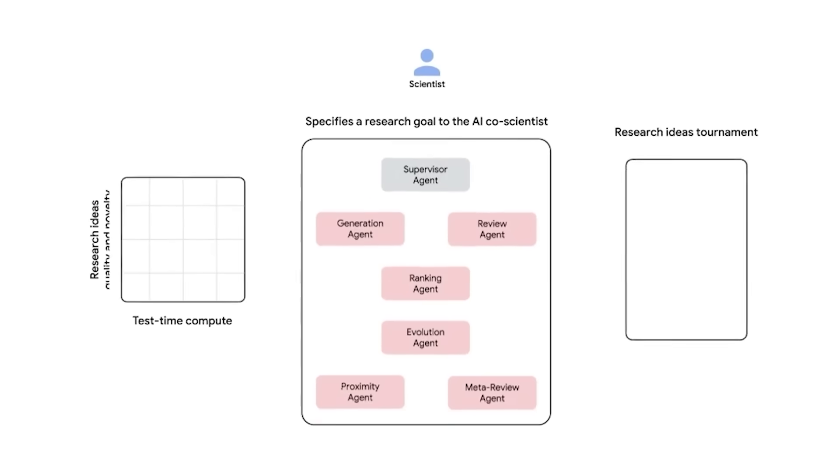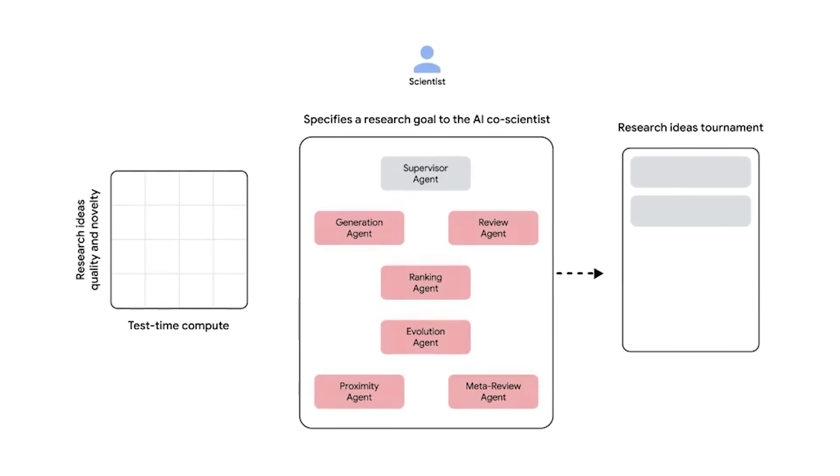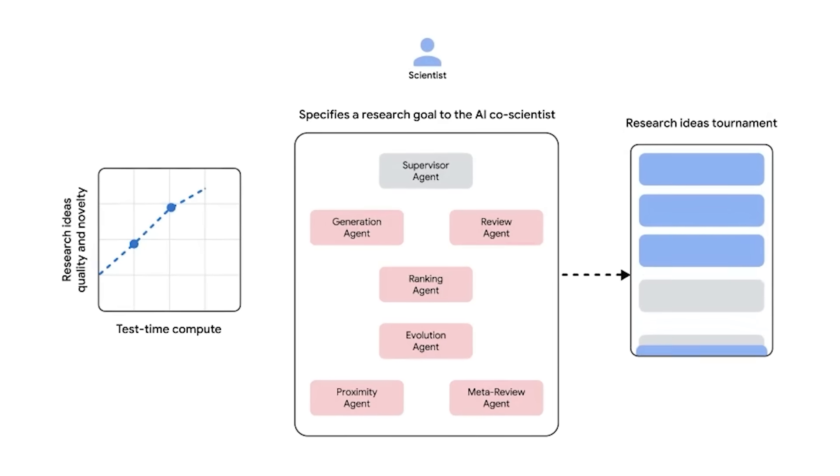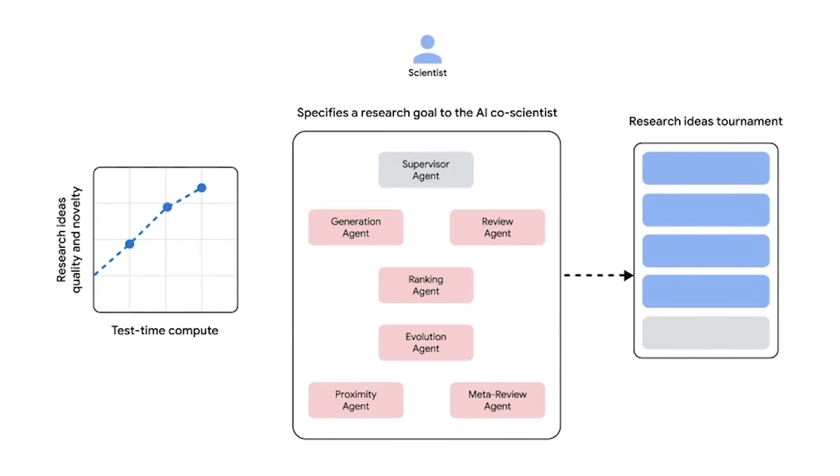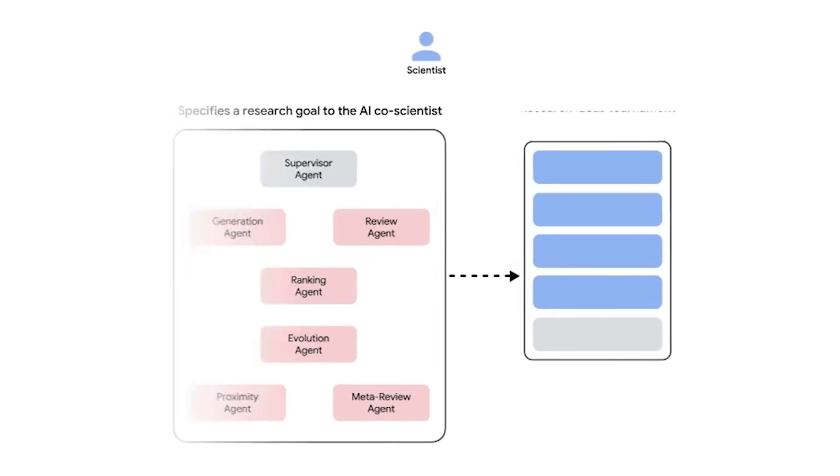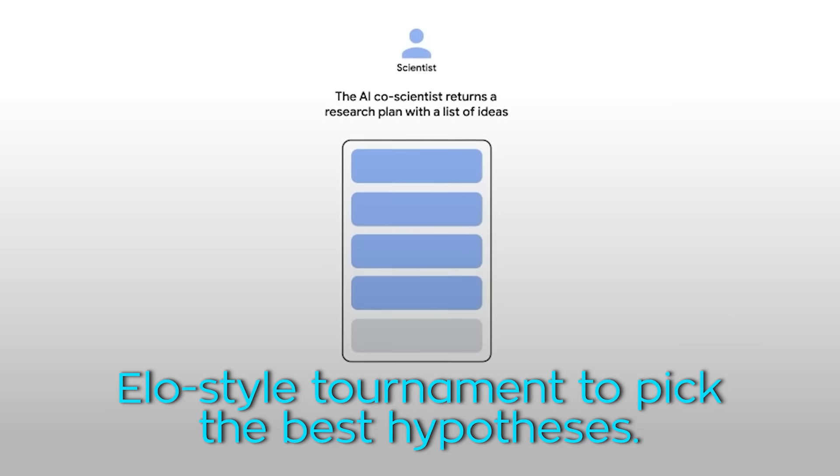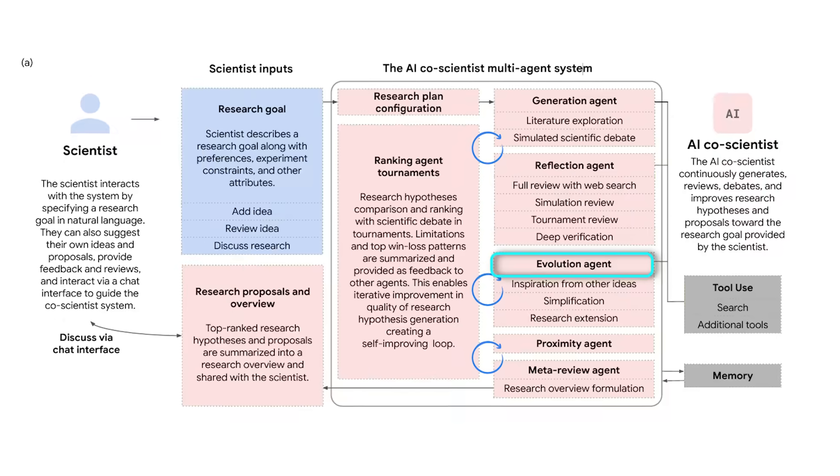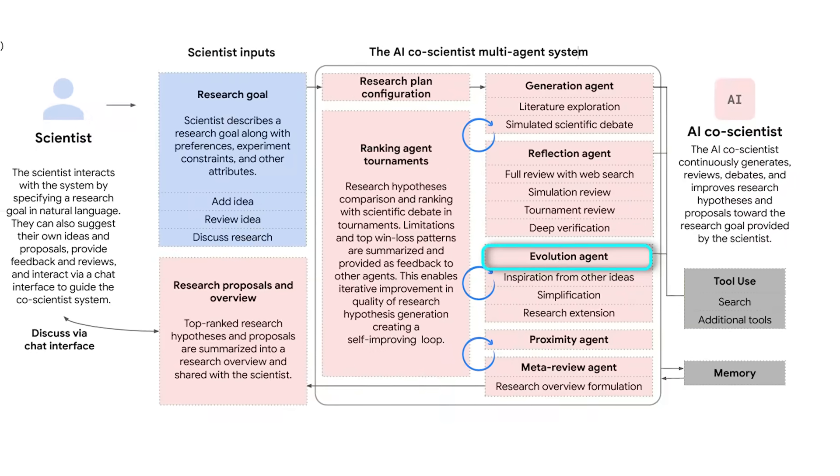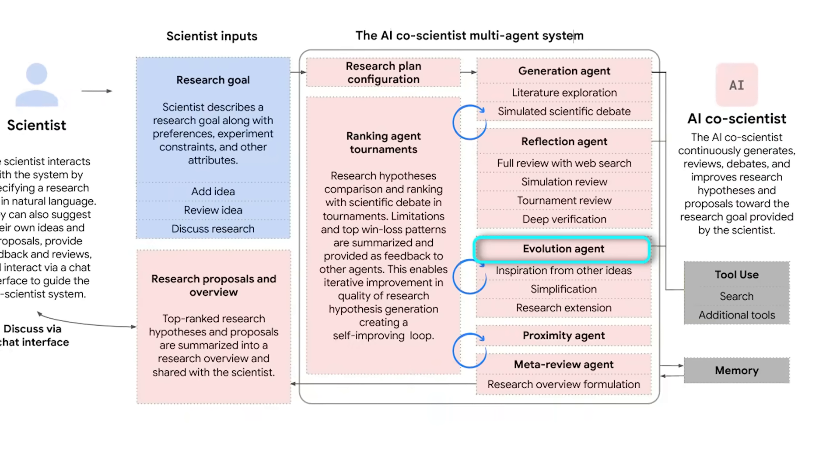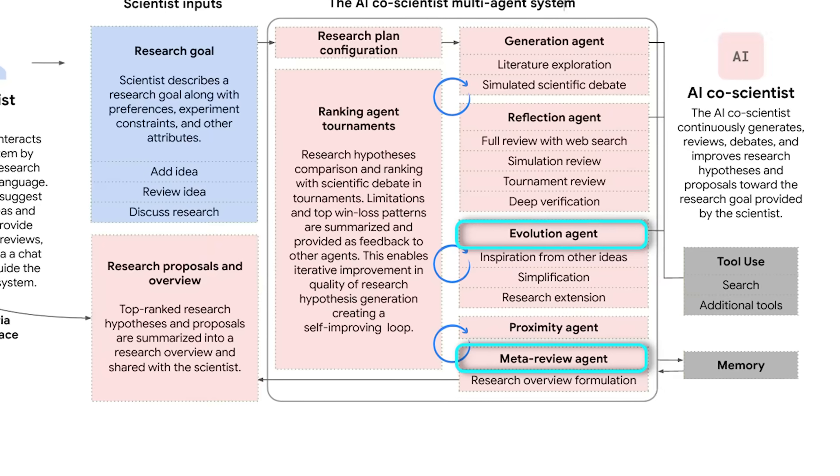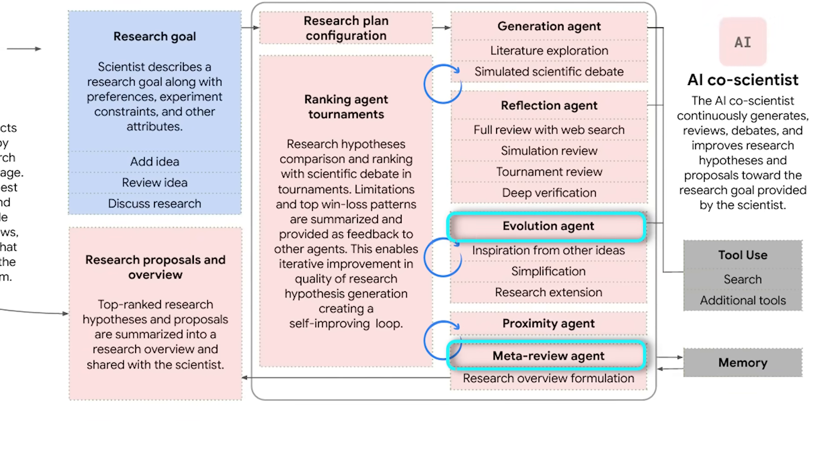There's a generation agent that brainstorms new research ideas by debating them internally. A reflection agent that acts like a peer reviewer, pointing out weaknesses. A ranking agent that uses an ELO-style tournament to pick the best hypotheses. Then, an evolution agent that merges top ideas or explores weird combinations. And finally, a meta-review agent that watches everything and keeps improving the system over time.